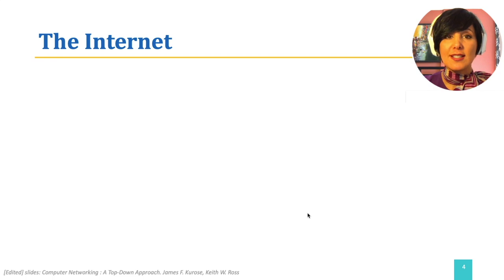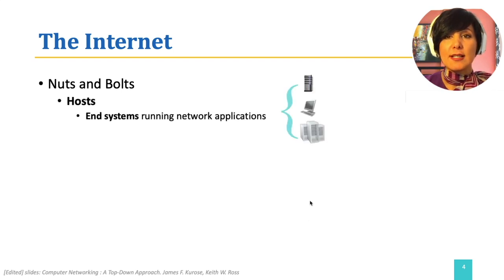First, let's provide the nuts and bolts definition, meaning defining it by the hardware and software that are its components. Laptops, PCs, smartphones, servers, tablets, TVs, gaming consoles, and Internet phones running network applications are all examples of devices that can be connected to the Internet. We call them hosts or end systems.